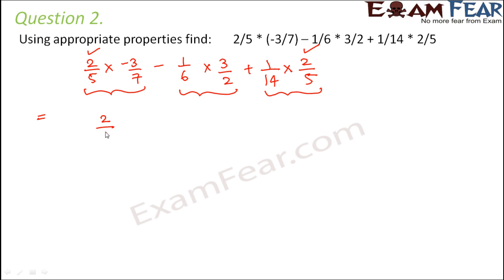So by commutative property we can say that 2 by 5 multiplied by minus 3 by 7 plus 1 by 14 into 2 by 5 minus 1 by 6 into 3 by 2. Now even when we change the order, the values will remain the same, that is assured by the commutative property of addition. So now in these two terms we will try to apply the distributive property.